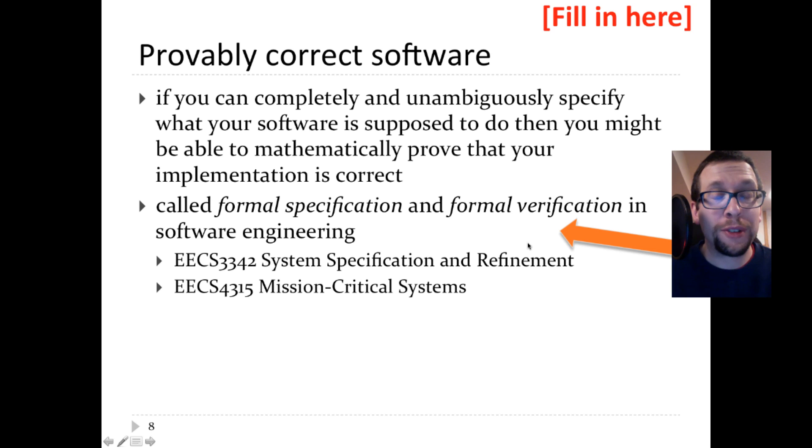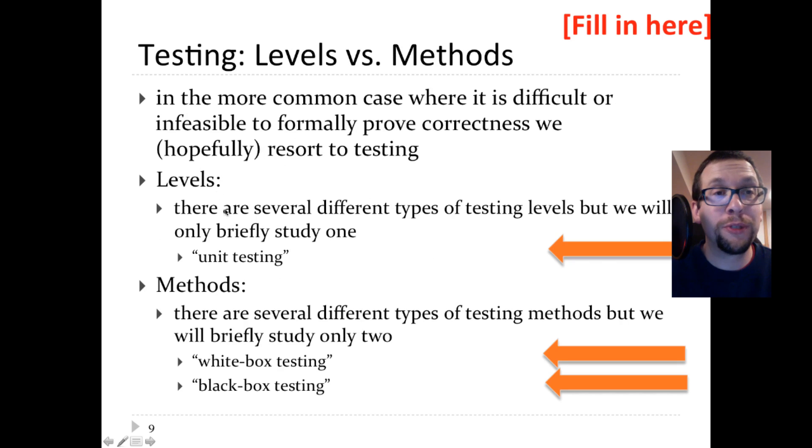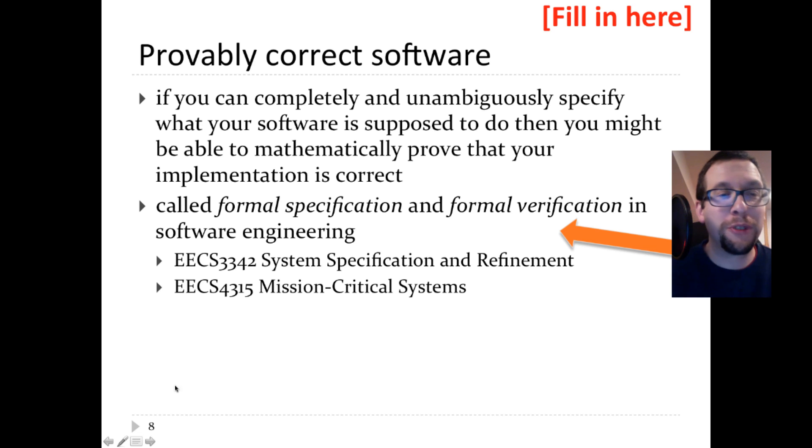One of the first things that we need to talk about here is: is it possible to have provably correct code? Basically what it means is that you have an unambiguously specified piece of software that does something in a mathematically provable way. There are courses that you can take at York that talk about that. ECS 3342 and 4315 are two courses that you might want to consider taking down the road to talk about the mathematical correctness of software.